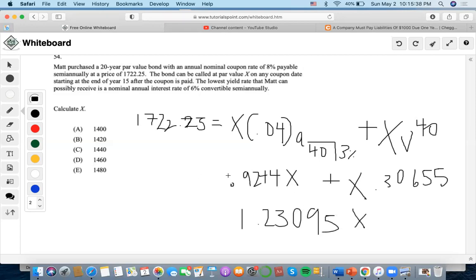Now let's solve for X. We do 1722.25 divided by 1.23095, and we get that X equals 1,399.